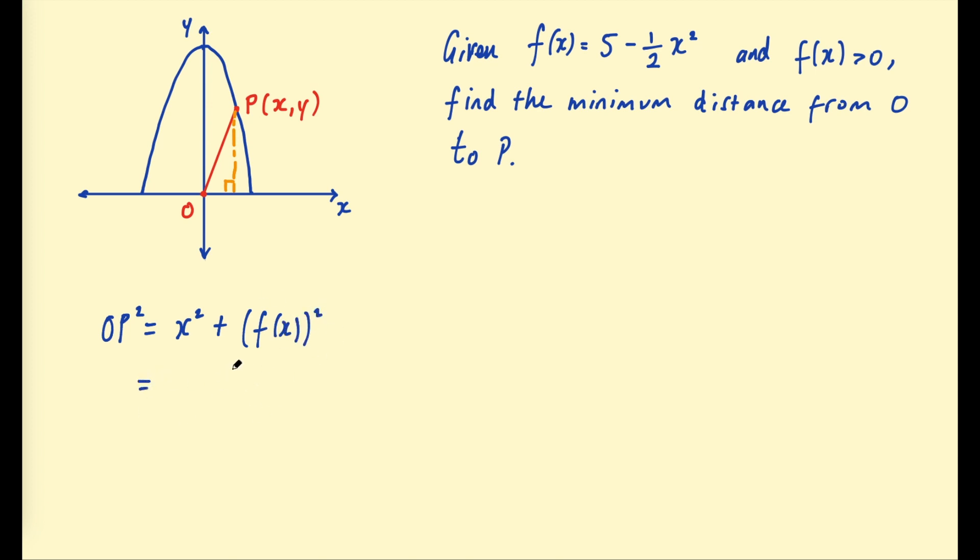So let's go ahead and plug f of x in there. This is going to be 5 minus a half x squared all squared. And then let's go ahead and expand out these brackets and simplify. Now we have an expression for the length of O to P in terms of x.